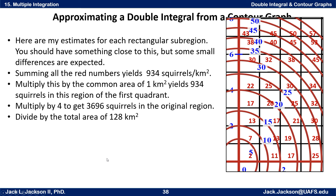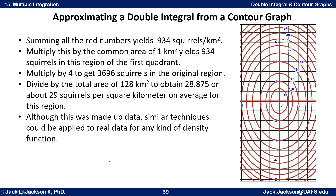If we divide by the total of 128 square kilometers, we get the average number. So our estimate is 3,696 squirrels in the total region, and that's roughly 29 squirrels per square kilometer on average. This is just made-up data, but a similar technique could be applied to real-world data for any kind of density function where we have the contours given. There are lots of real-world examples where this could be applied.